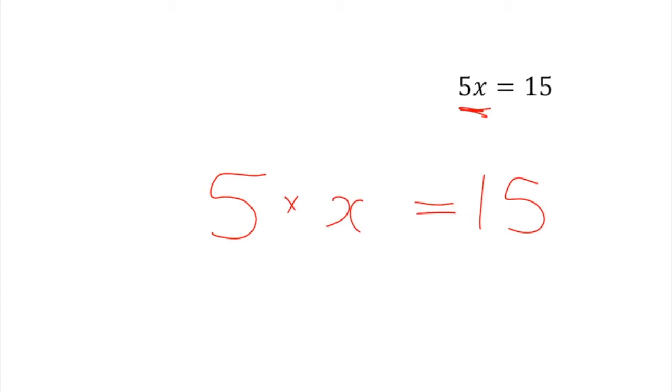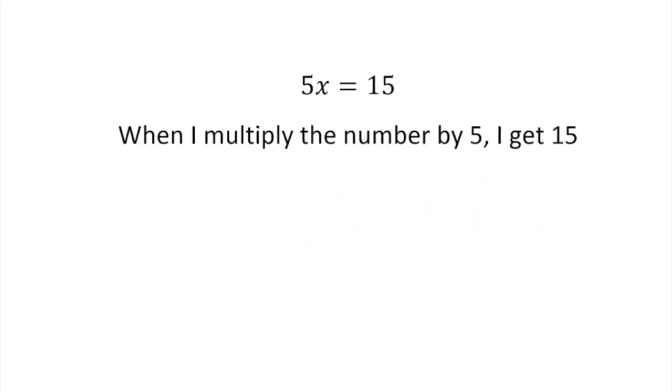So what this says to us, what does this equation say to us? It says 5 times something gives me 15. Putting it into nice language, what this says is when I multiply the number by 5, I get 15.